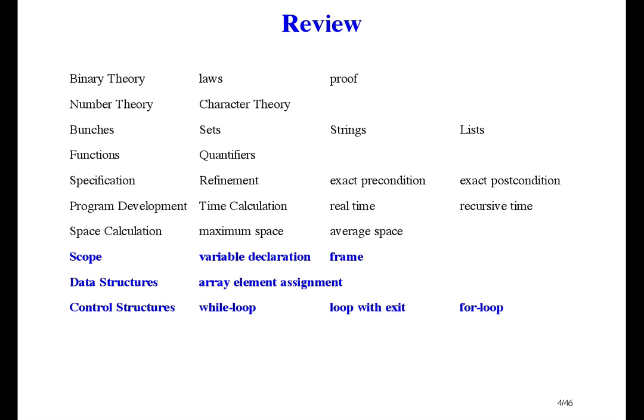In the last part of the first half, we looked at how some common programming language features fit into the theory of programming. Variable declaration is existential quantification. Frame, which appears as module or object in some languages, temporarily removes variables from a scope. Array element assignment causes a small problem, and we saw that the solution is to rewrite it as an assignment to the whole array. And we saw how to reason about loop constructs.